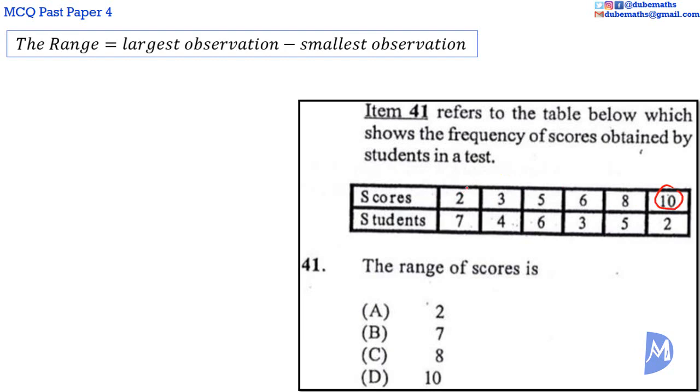The smallest score is 2. The range is 10 subtract 2. The range of scores is equal to 8. The answer is C.